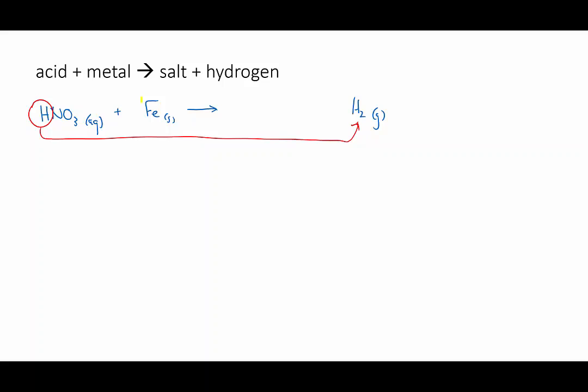So then the salt must be formed from the metal and from the anion left over from the acid. That would give us iron nitrate. And then we can balance the reaction.